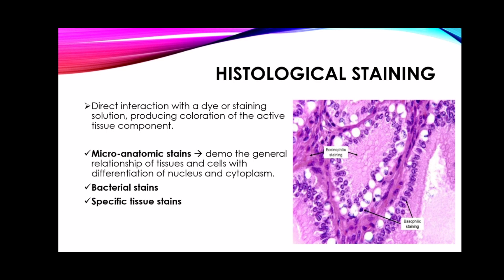Histological staining is the process where tissue constituents are demonstrated in sections by direct interaction with a dye or staining solution, producing coloration of the active tissue component. Under this classification fall microanatomic stains, bacterial stains, and specific tissue stains — for example, for the muscles, connective tissue, and neurological stains.